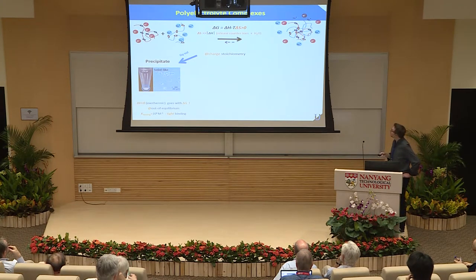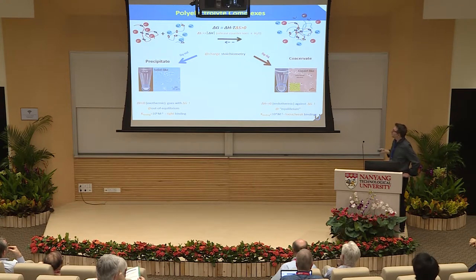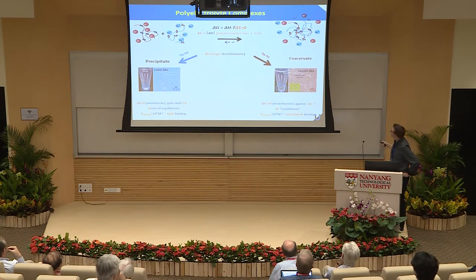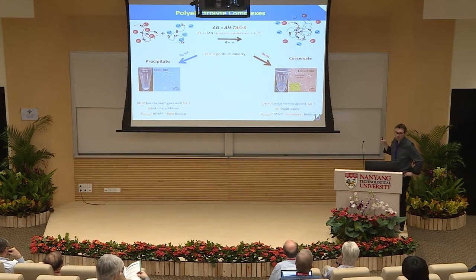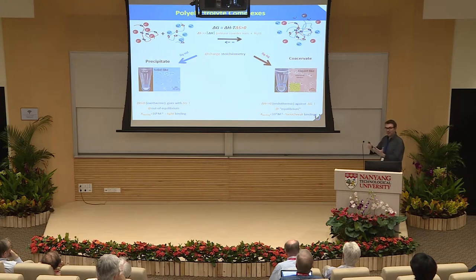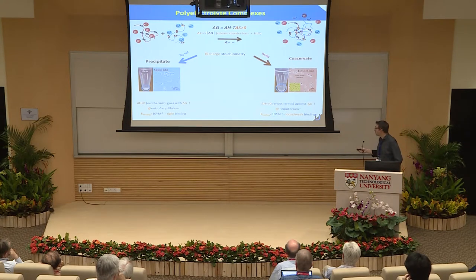Sometimes, depending on the system, you can get another liquid-liquid phase separation — what people call a coacervate. In this case, you don't get aggregates, but rather spherical objects that are in equilibrium with the supernatant. They are spherical, meaning there is a small but measurable surface tension. From our experiments, the complexation enthalpy is more or less positive, meaning it acts against the minimization of delta G. Also, the binding constants are much smaller than in the case of aggregation.